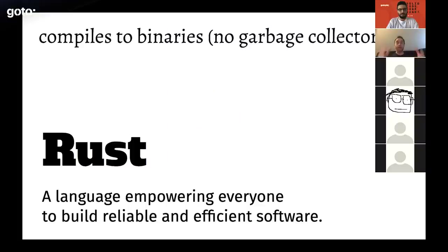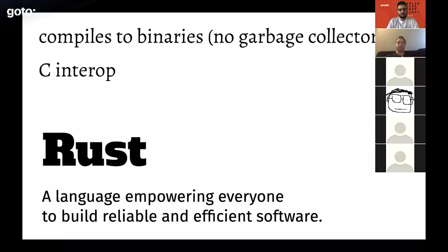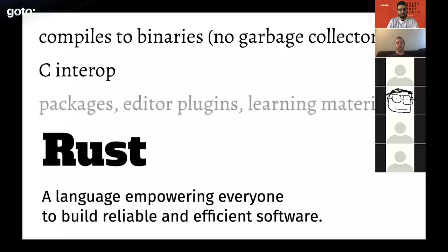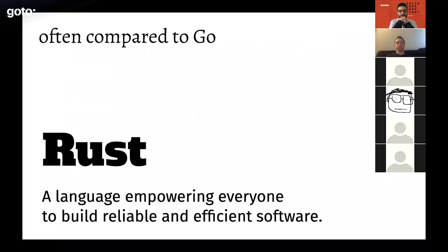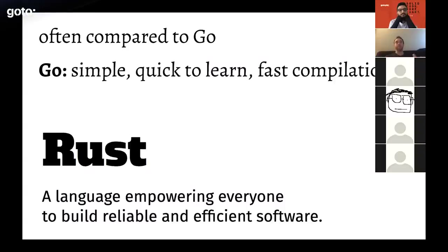Rust compiles to binaries — machine code — not running on a virtual machine, with no garbage collector, just like C++. It has C interop, so you can have Rust code talk to C libraries or incrementally bring Rust into an existing C++ project. It has a package ecosystem, editor plugins, and learning materials. Rust is often compared to Go, but I don't personally think that's a great comparison — Go is intentionally a very simple, quick-to-learn language with a very fast compiler.